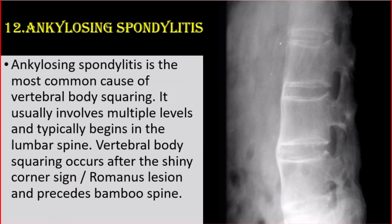Number 12: Ankylosing spondylitis. Ankylosing spondylitis is the most common cause of vertebral body squaring. It usually involves multiple levels and typically begins in the lumbar spine. Vertebral body squaring occurs after the shiny corner sign, Romanus lesion, and precedes a bamboo spine.